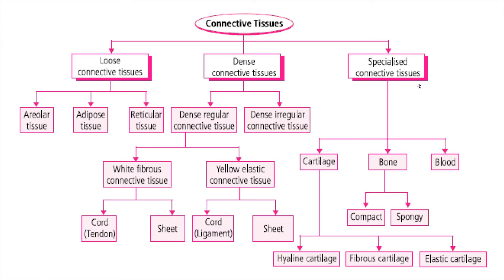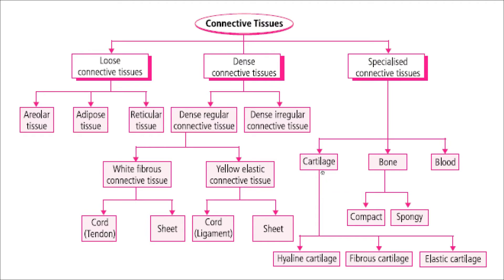Specialized connective tissue includes cartilage, bone, and blood. The intracellular material of cartilage is solid and pliable and resists compression, enabling us to bend. Cells of cartilage are called chondrocytes, present in small cavities within the matrix called lacunae. Most cartilage in vertebrate embryos is replaced by bones in the adult stage. Cartilage is present at the tip of the nose, outer ear (pinna), ear joints, between adjacent vertebrae, limbs, and hands in adults.